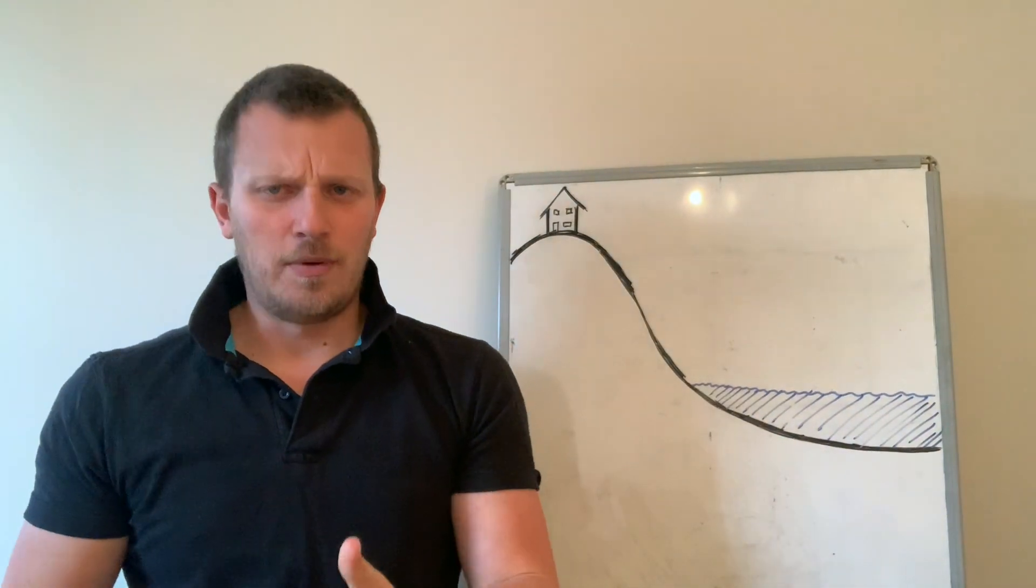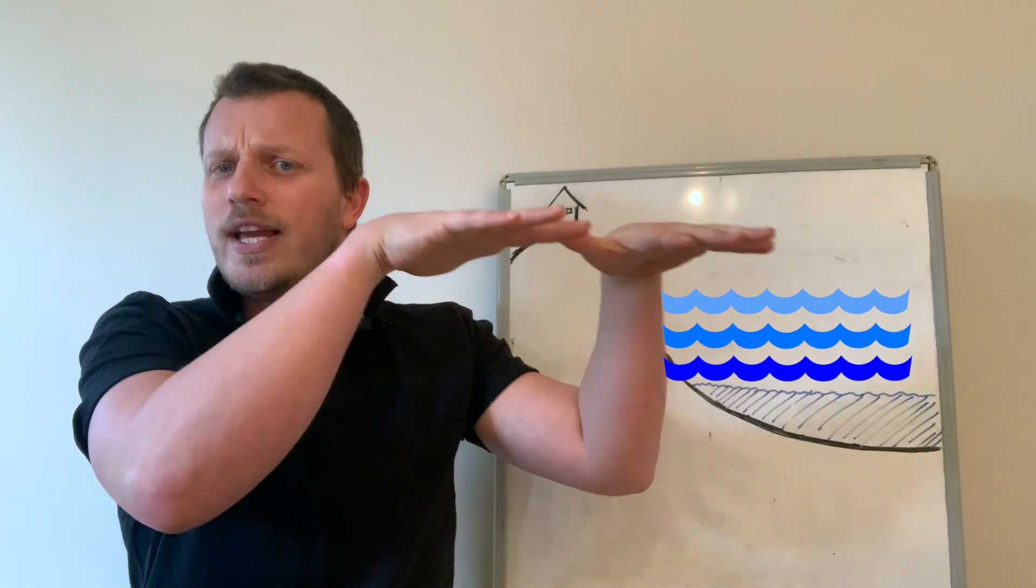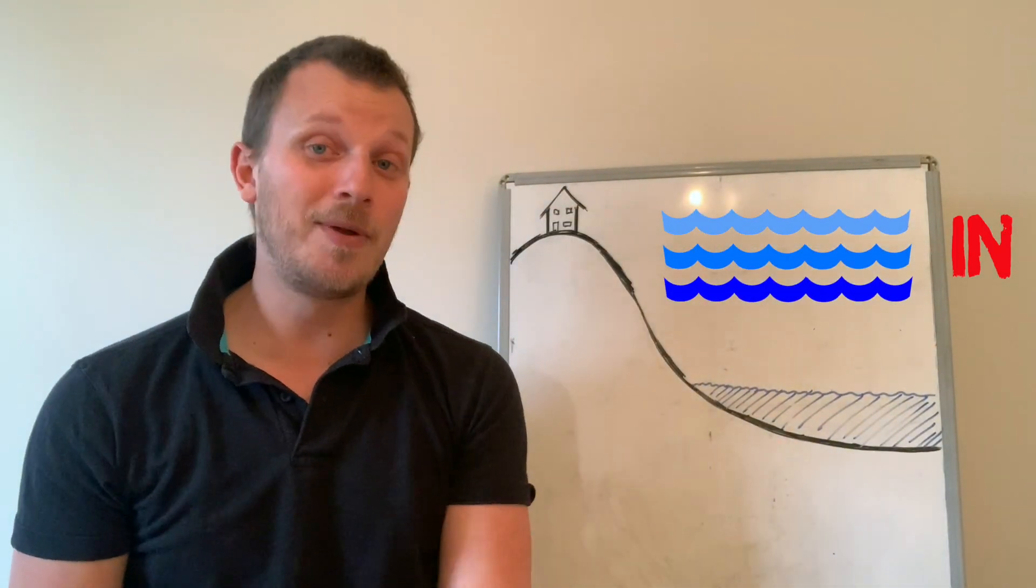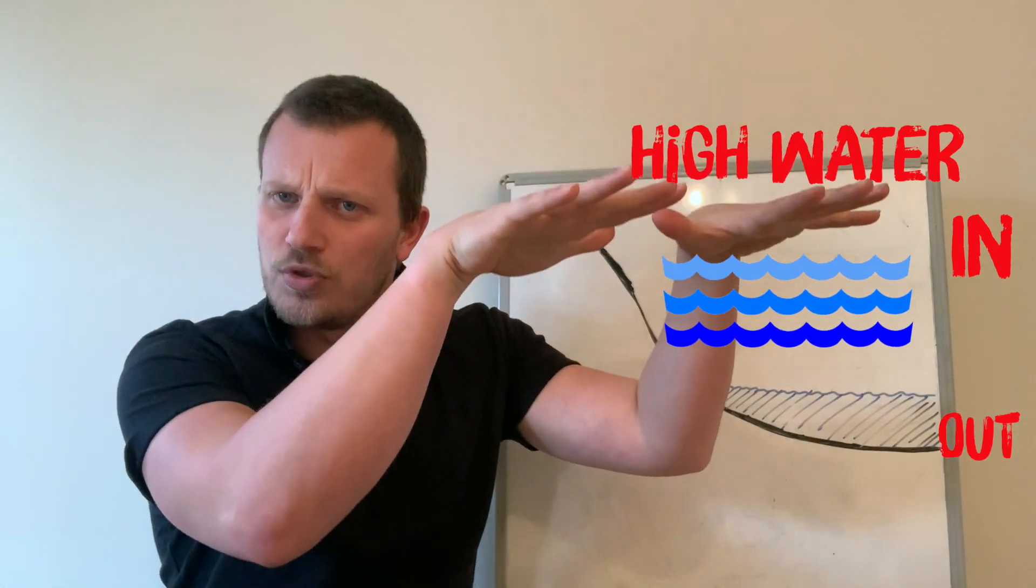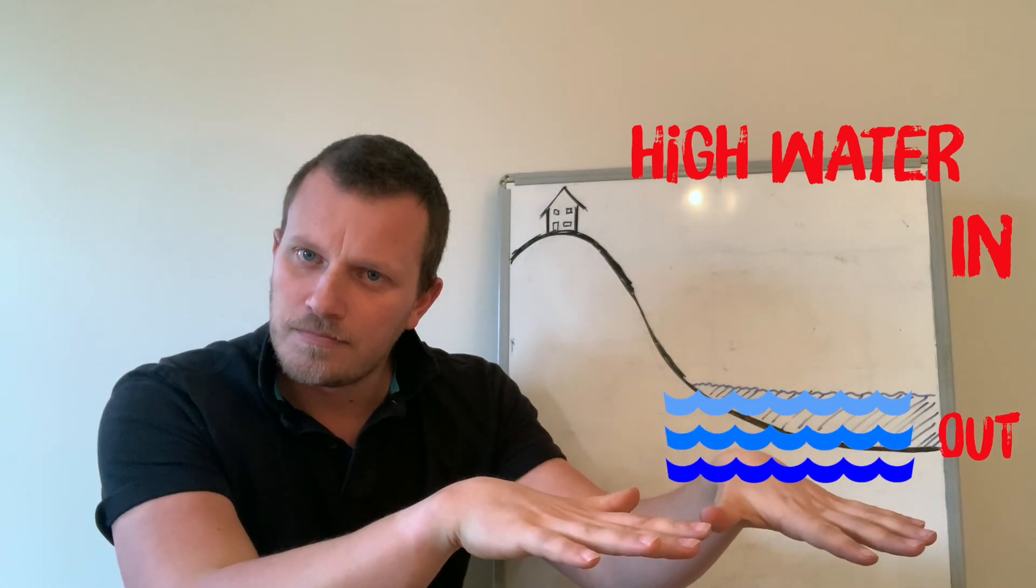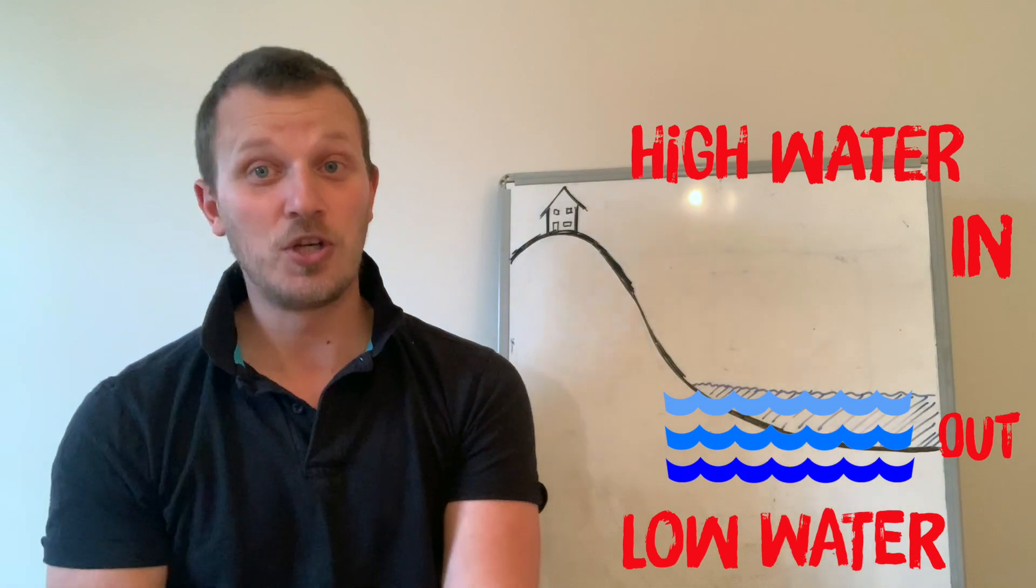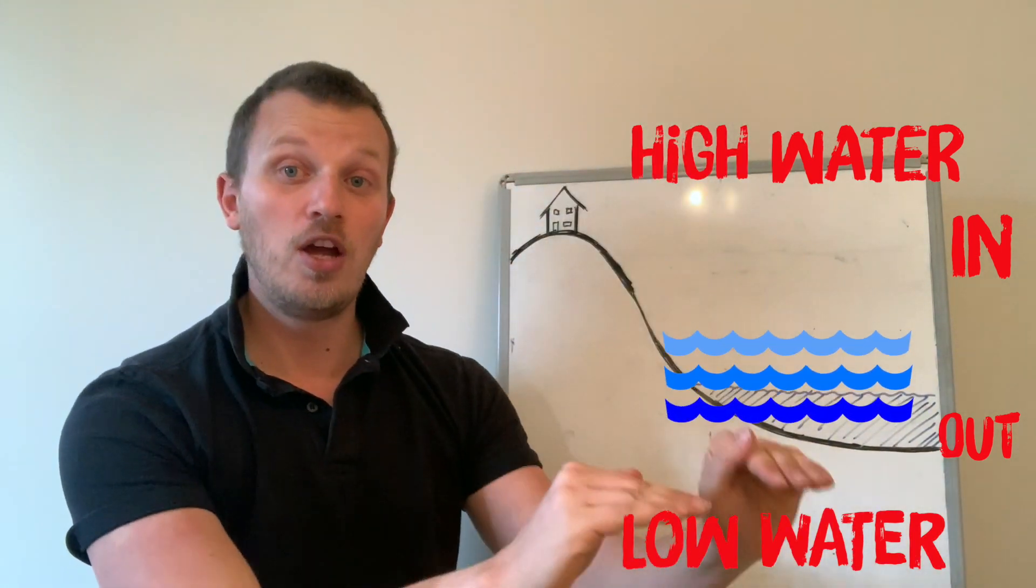When it floods, it comes in all the way and rises. When it gets to the top, the water is high and we call that high water. When it ebbs and goes out, the water goes down. When it gets to the bottom we call that low water because the water is low.